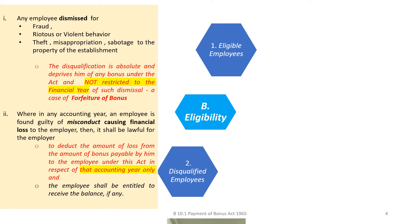Whereas, employees who are guilty of misconduct causing financial loss receive a somewhat more liberal treatment. What the Act states is that out of their bonus, whatever loss cost to the company could be recovered, but the balance has to be paid back to them. This action of recovery pertains only to that accounting year — it cannot be carried forward to the future or applied to the past.